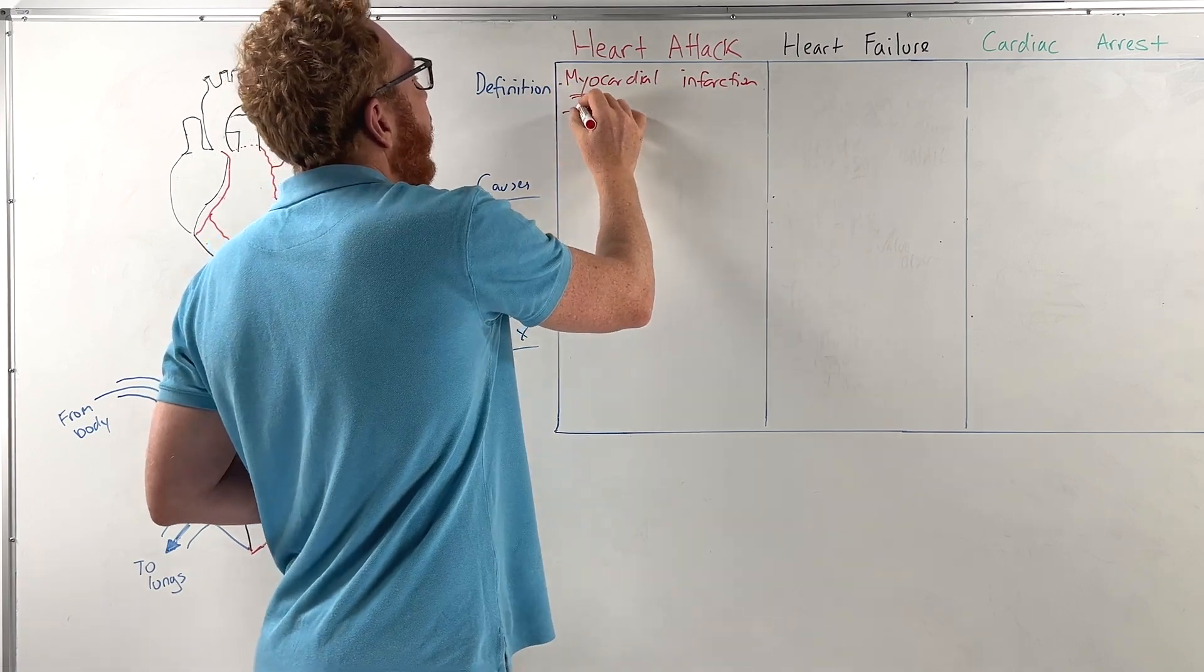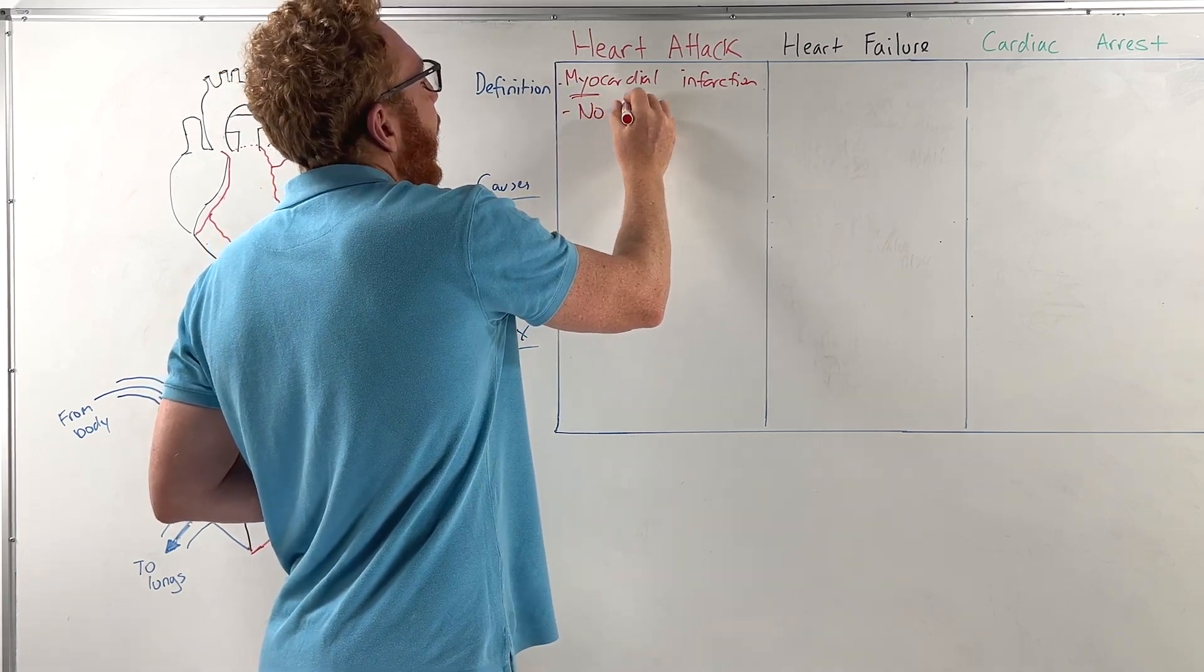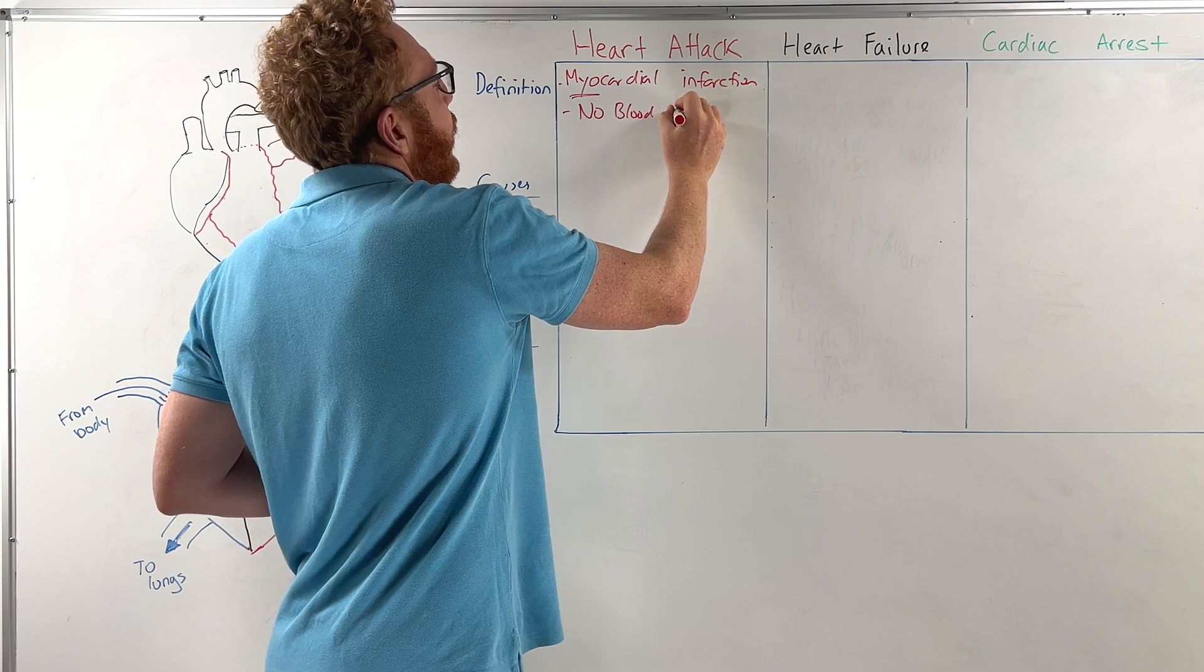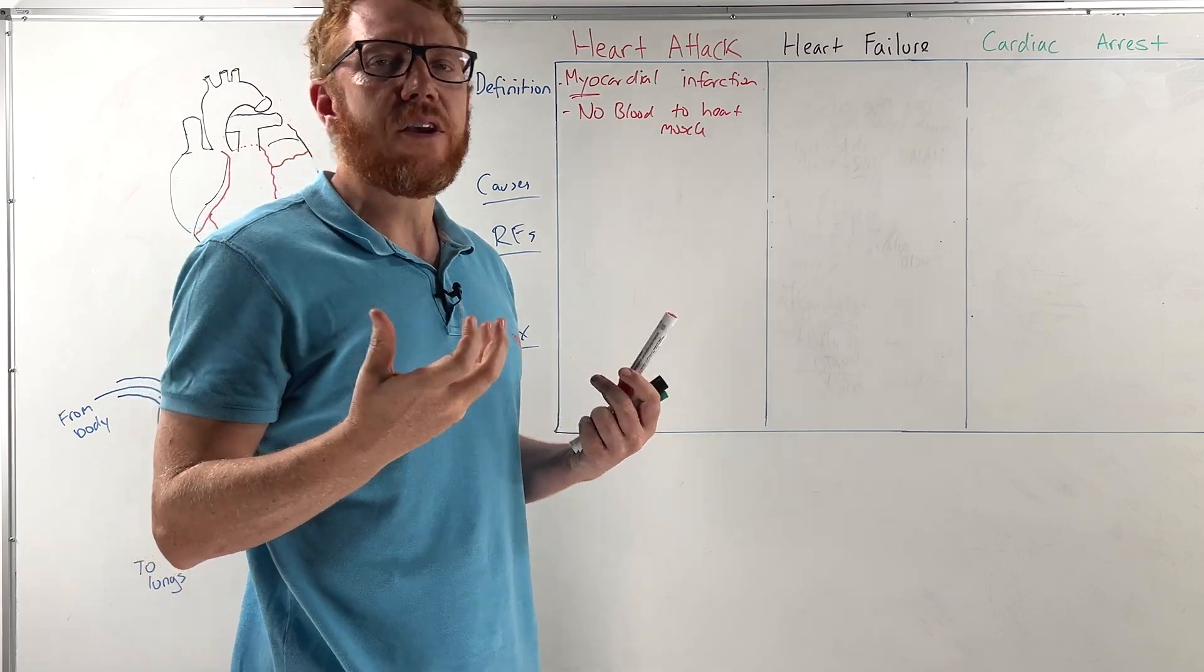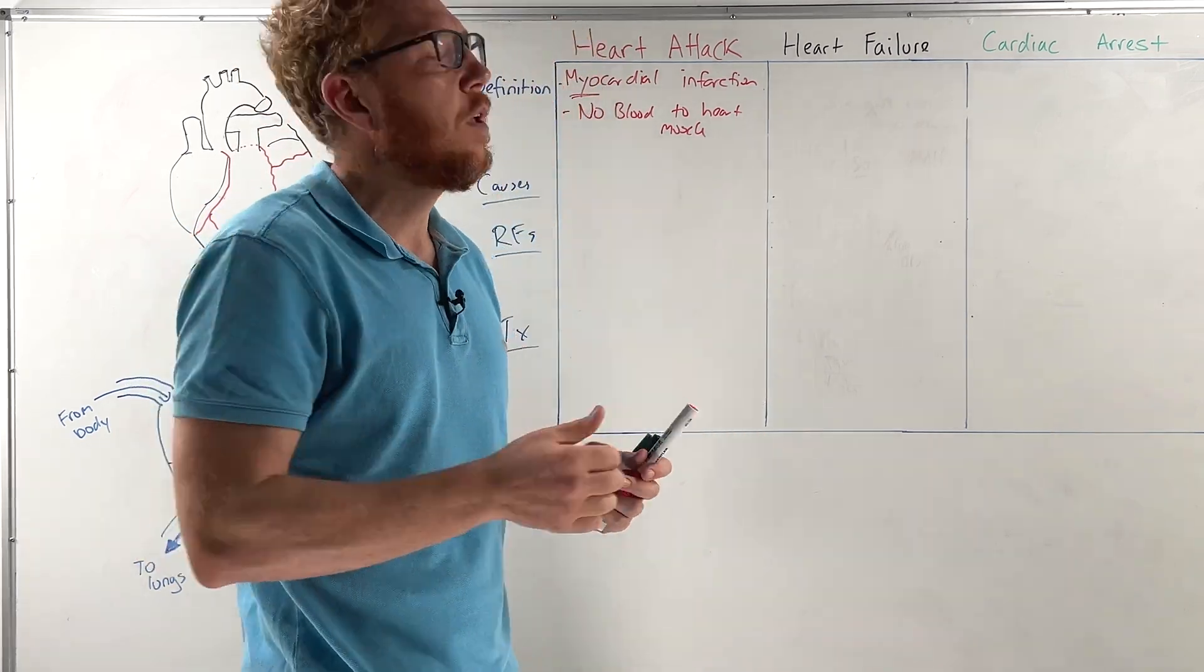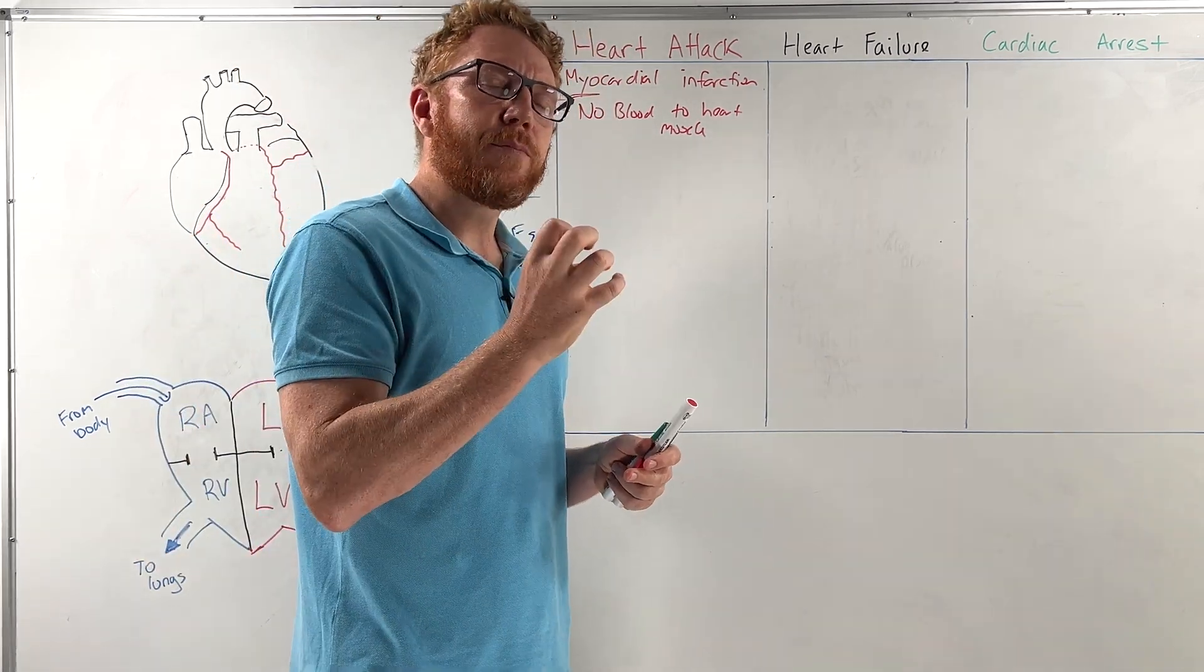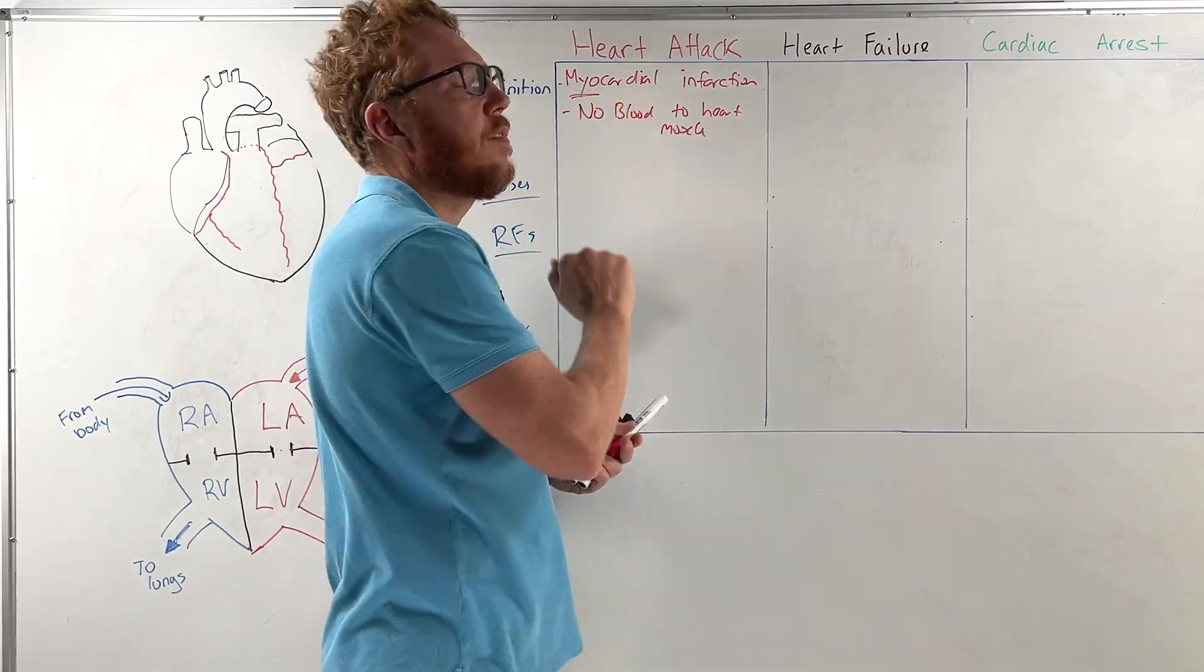So technically there is no blood to the heart muscle. The heart muscle, at least in an area of the heart, not necessarily the whole entire heart muscle, starts to die because it runs out of blood.